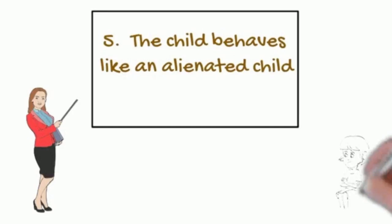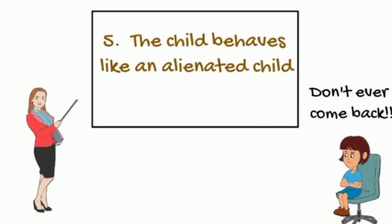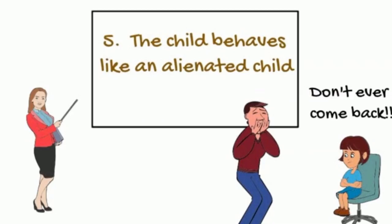Factor five, the child behaves like an alienated child. There are eight behavioral manifestations of parental alienation that differentiate alienated kids from non-alienated kids. Abused children and alienated children don't treat their parents the same way.